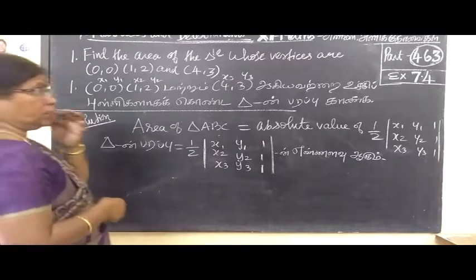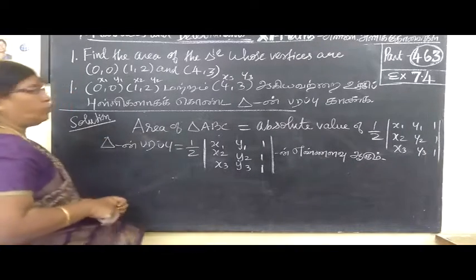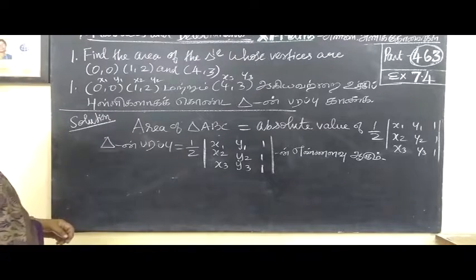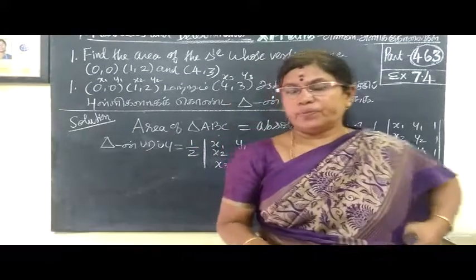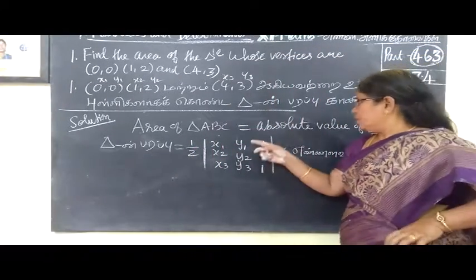If you want to find the area of the triangle whose vertices are 3 vertices, we are going to find the area of the triangle. Area of the triangle is formed.